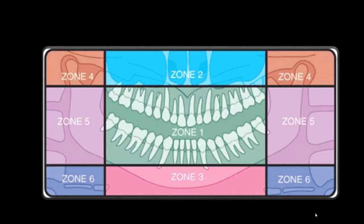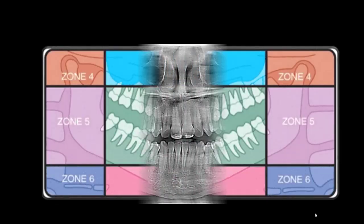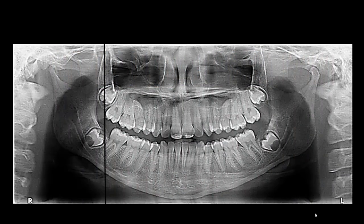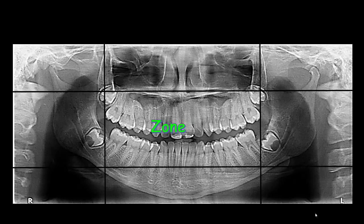The panoramic radiograph will be divided into six zones and I will look at each zone step by step so I won't miss any part. I'll divide this radiograph into six zones. Zone number one is showing the teeth, so I'll look at the teeth one by one. I'll start from the upper right towards the upper left, and then the lower left towards the lower right.